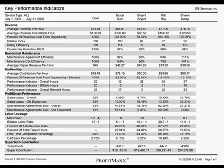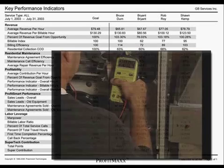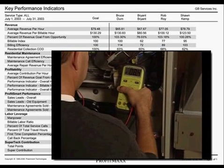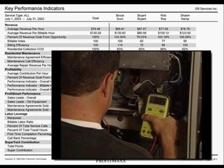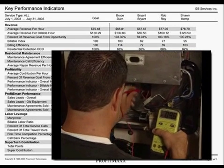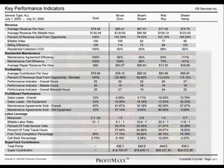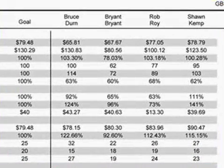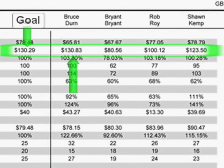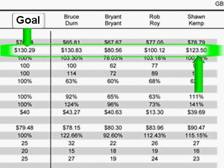When it comes time to send someone over to help out another department, the guy with the lowest revenue per billable hour is the guy you need to tap on the shoulder. He may not like it, but there are techs who are doing a much better job. In our company, Bruce is right at our goal of $130.29. Sean is at $123.50, missing the goal by $6.79 per hour.